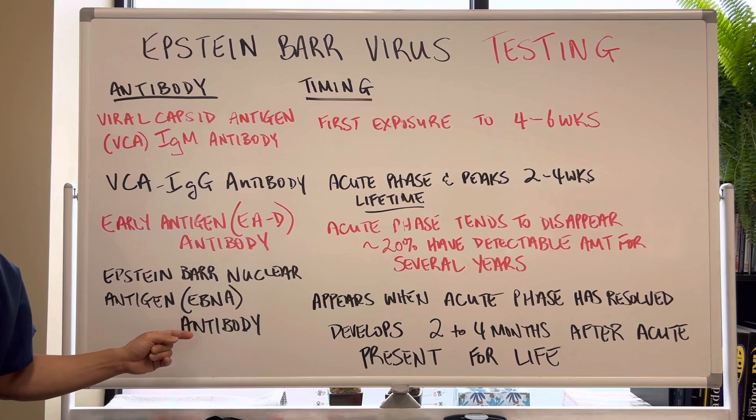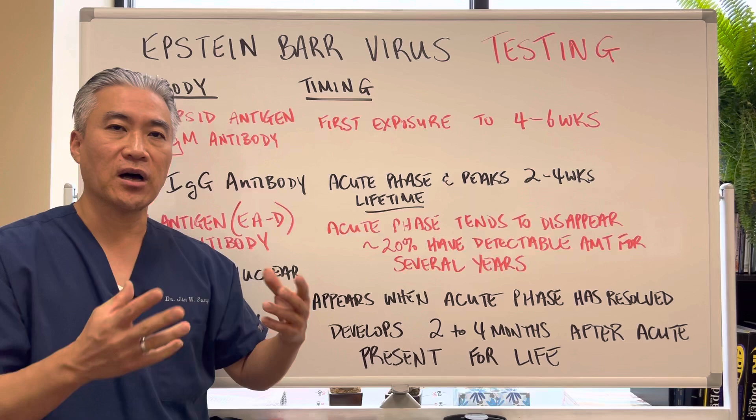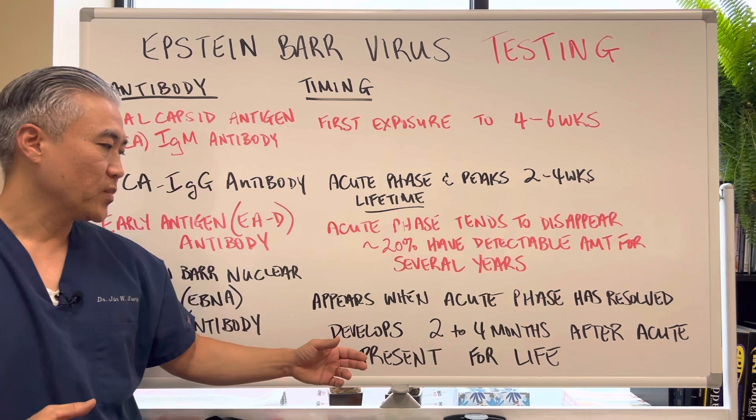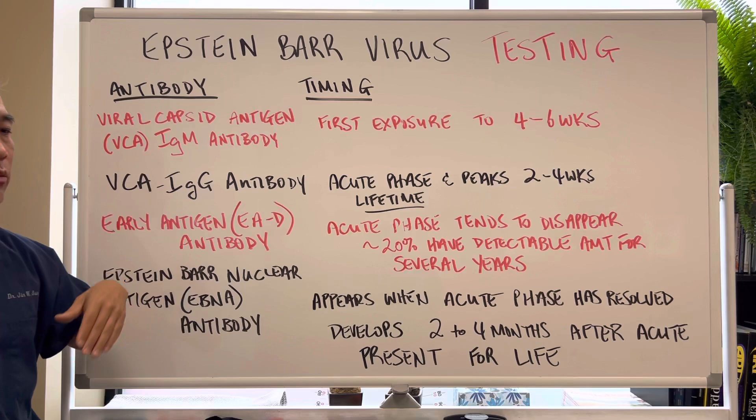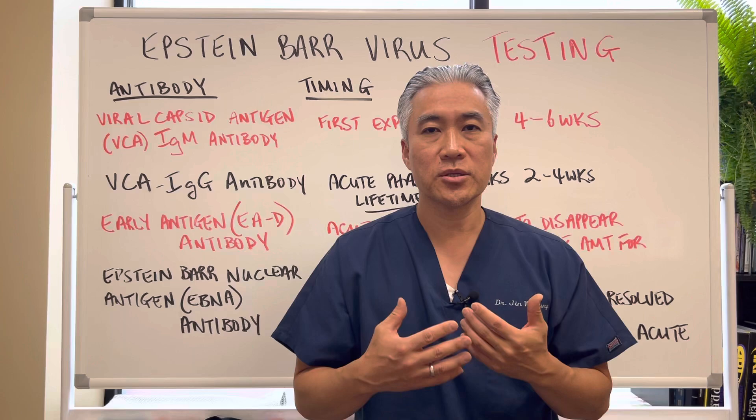Epstein-Barr nuclear antigen testing, or EBNA antibodies, appears when the acute phase is resolved. So you're out of the acute phase of the Epstein-Barr virus, and it develops two to four months after the acute phase and will persist for your lifetime. So both VCA IgG and EBNA will persist and show up in your blood for your lifetime.